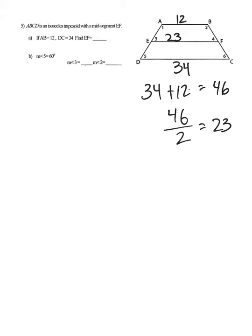Then we also have that measurement of angle 5 is 60 degrees. That wants you to give measurement of angle 3 and then measurement of angle 2 as well.